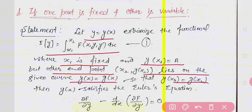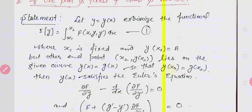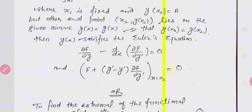Then this y will satisfy the Euler equation, and also the condition: f + (g' - y') * (∂f/∂y') evaluated at x2 equals 0.